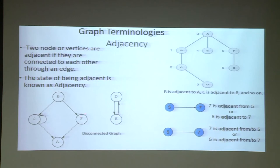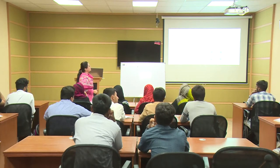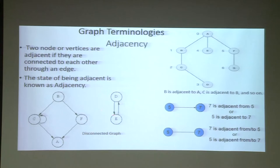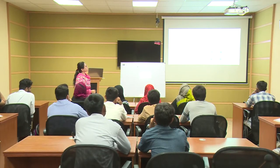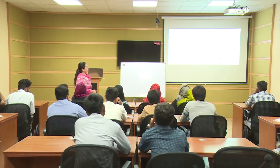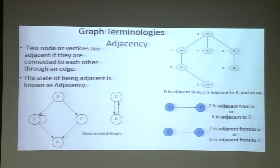B is adjacent to F, and F is adjacent to the last vertex. Note that this is a disconnected graph because the graph is not connected with all vertices. If we connect E with F or D with F, it will become a connected graph. D is adjacent to E and E is adjacent to D because of bidirection. In a directed graph, we say 5 is adjacent to 7 or 7 is adjacent from 5.